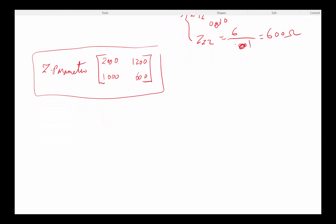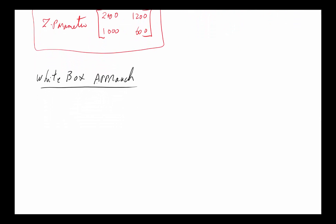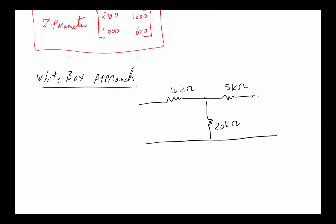The white box approach, on the other hand, is where the electrical circuit is given to us and our task is to write the Z parameters directly. For a simple example, consider a two-port network with a 10 kΩ resistor, a 20 kΩ resistor, and a 5 kΩ resistor — with one port on each side of the network.